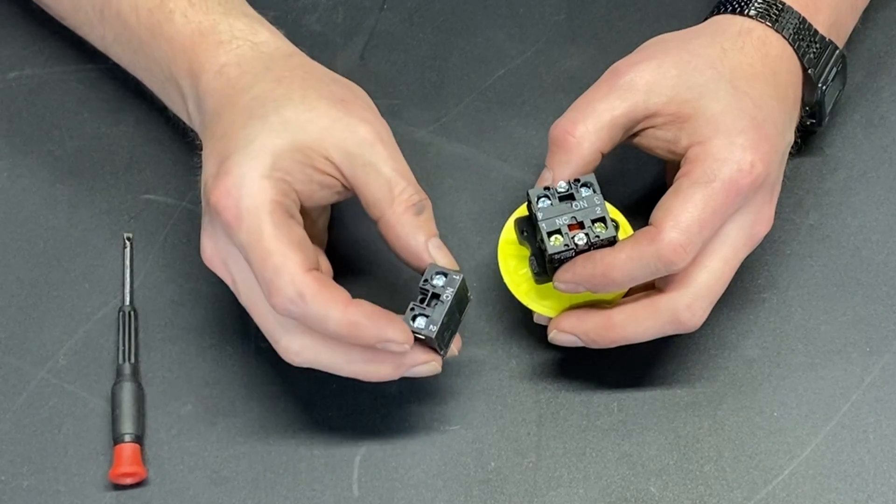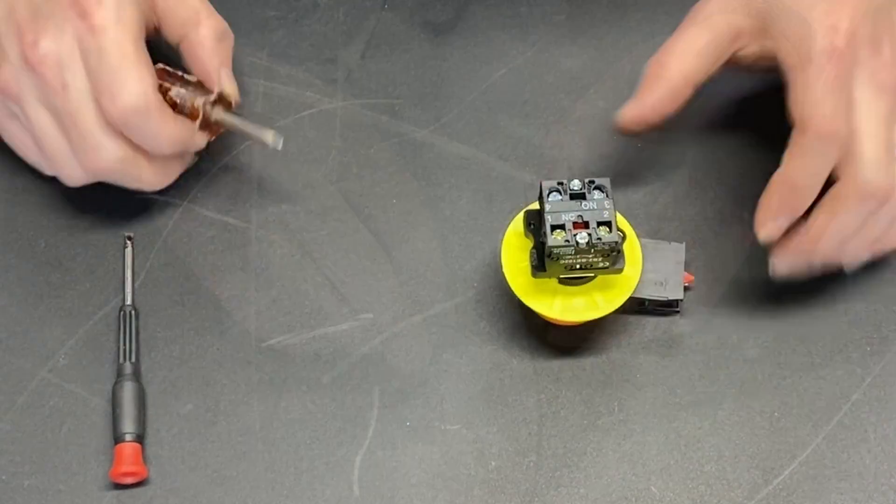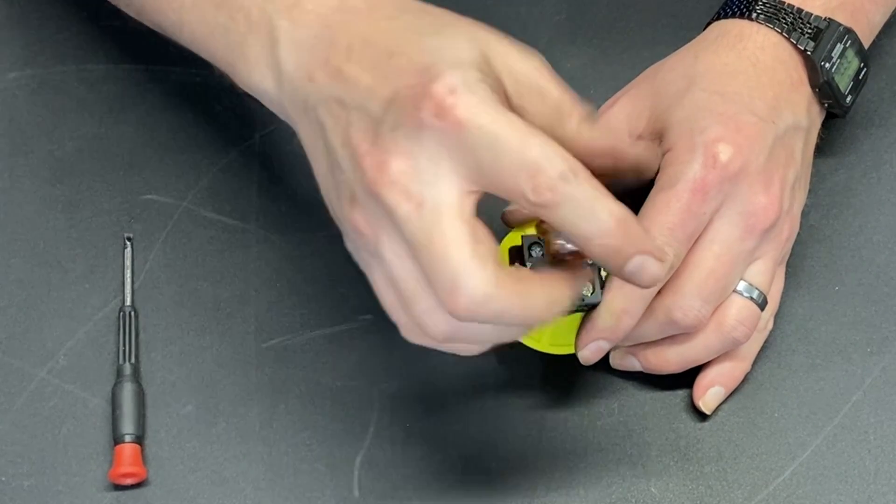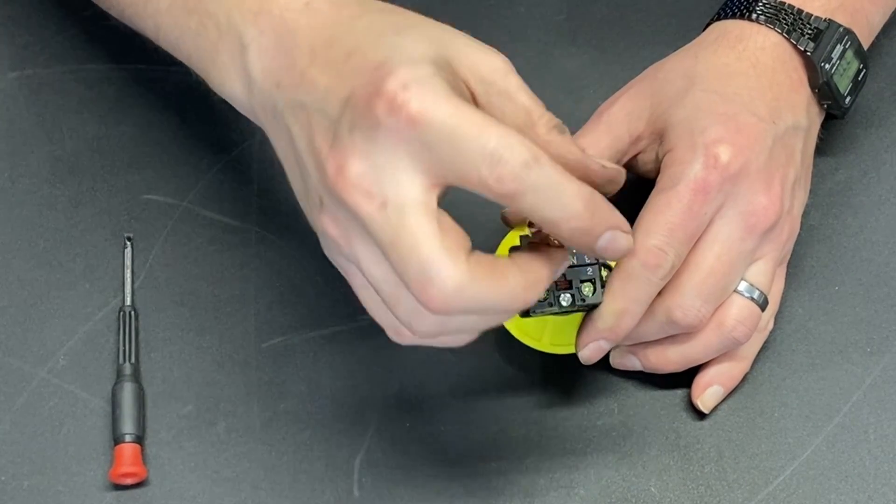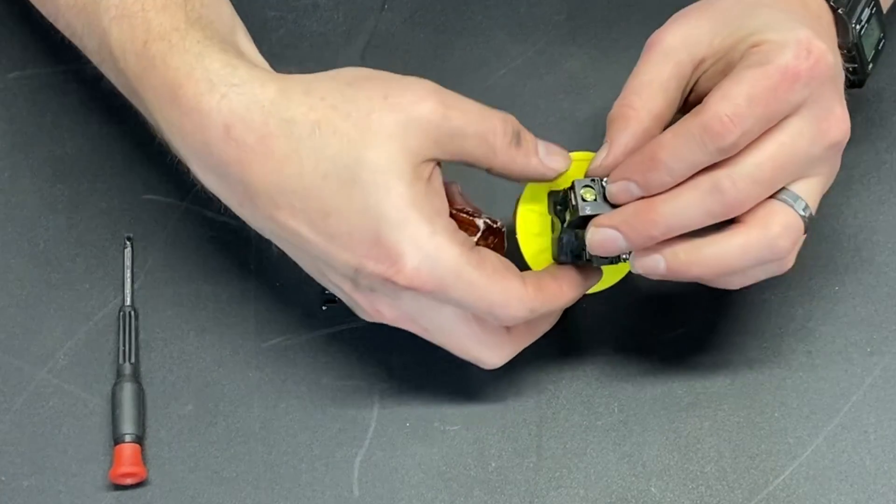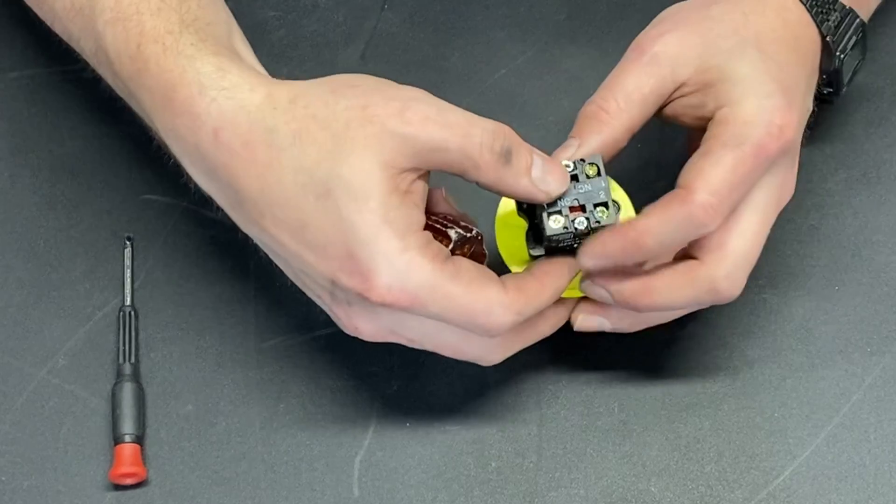Here I have another normally closed switch. With that in mind, I can now take the switch that is normally open and remove it and put a second normally closed switch into this configuration.